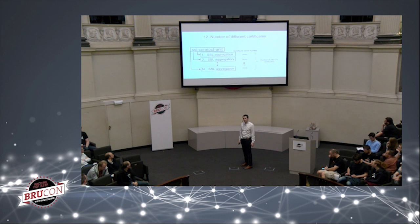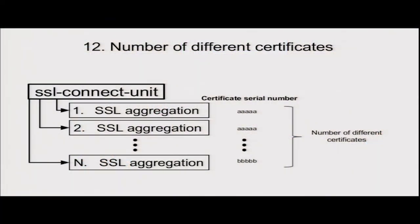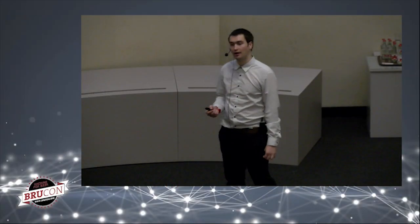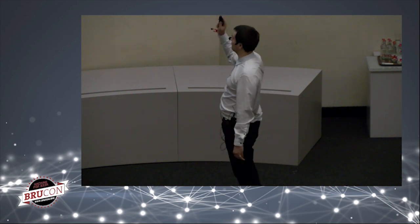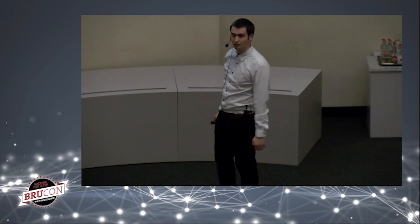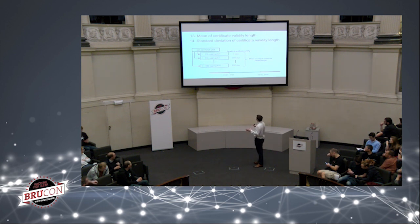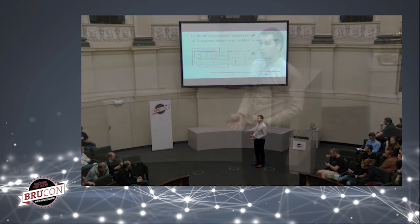Usually one SSL connect unit has one certificate, but sometimes there are more. So one feature is simply the count of unique certificates in an SSL connect unit. Then there is the mean and standard deviation of certificate validity length — each certificate has a start and end date, and we compute mean and standard deviation of those validity lengths across all certificates used in the connect unit.